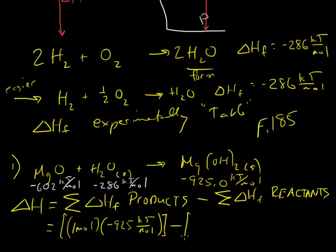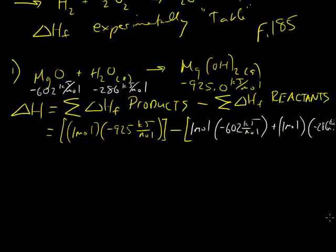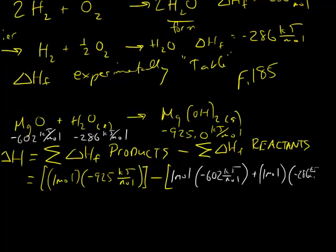And then we subtract the sum of all the reactants. So the first one, we've got one mole of magnesium oxide, times negative 602 kilojoules per mole. And then we add to that, we got one mole of water, times the negative 286 kilojoules per mole. So there we go, kilojoules per mole.